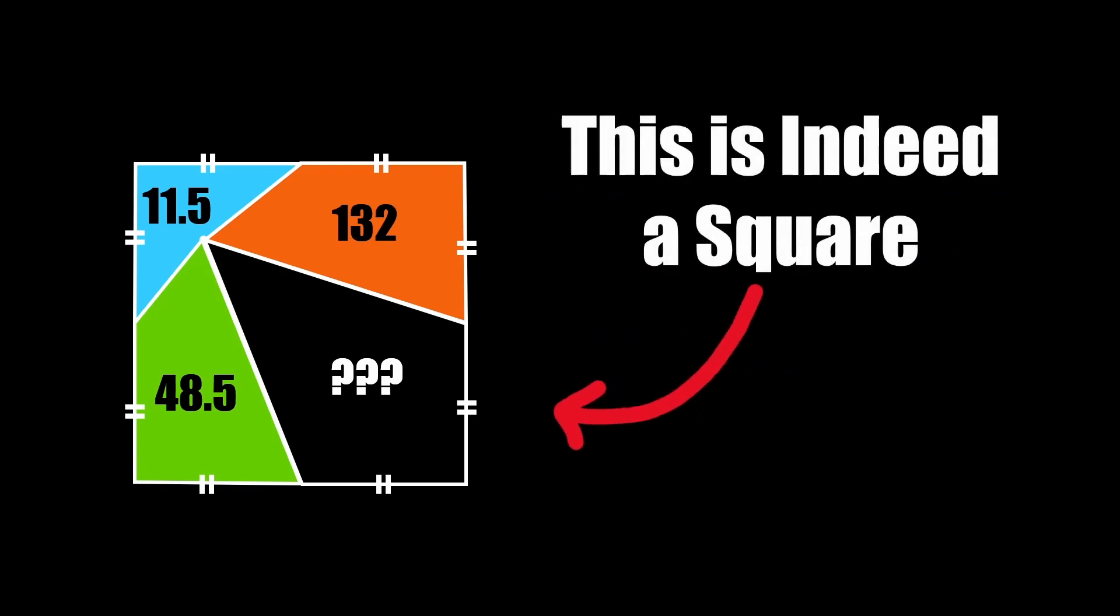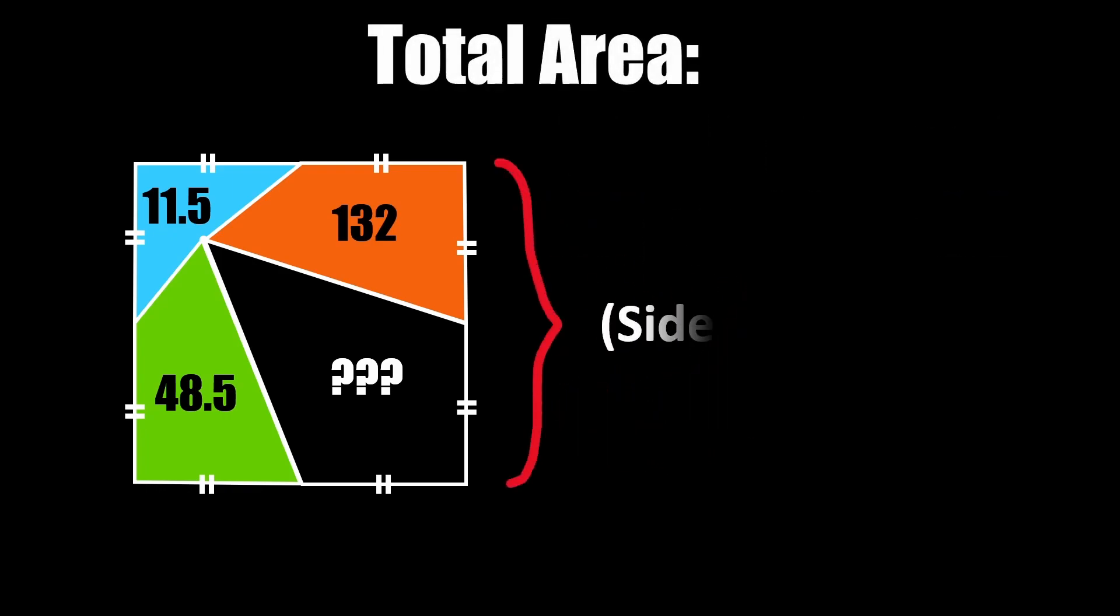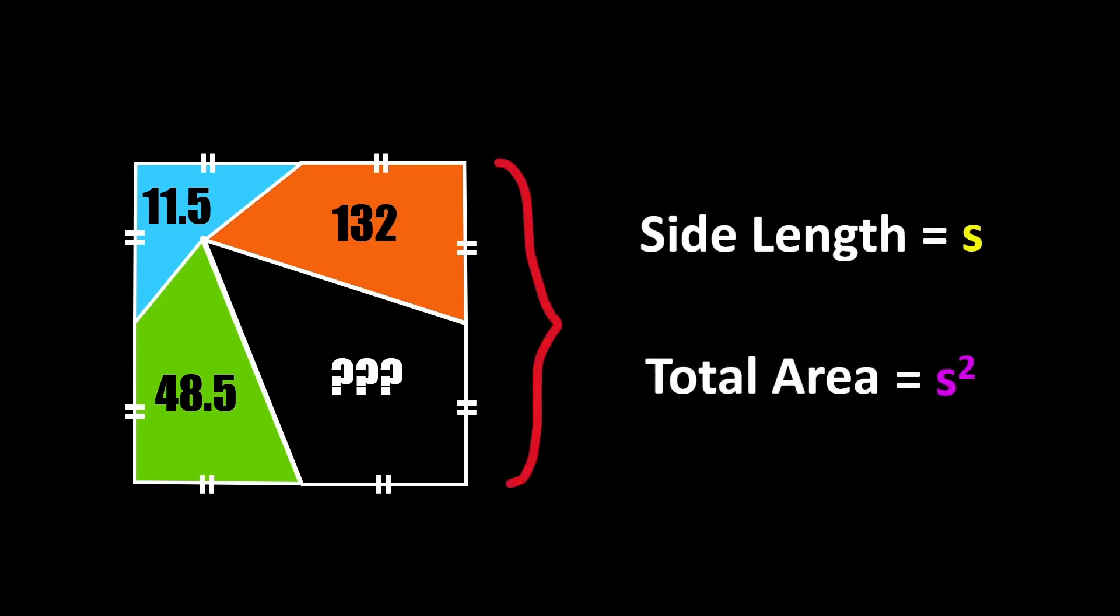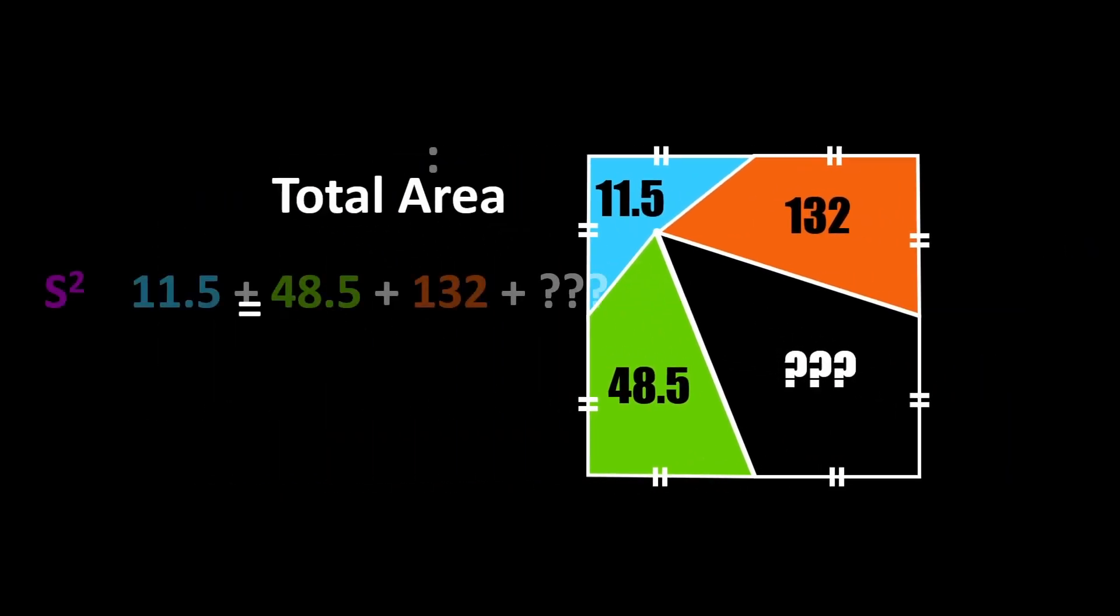Next because we confirm this is a square we can express the total area as the square of one of its side lengths. Let's call that side length s and the area s squared. And now that we have this expression for the area we can set it equal to the sum of all of our regions.